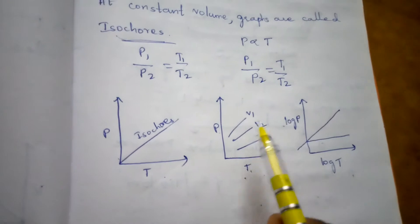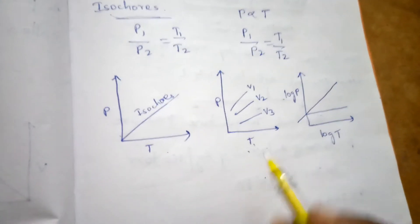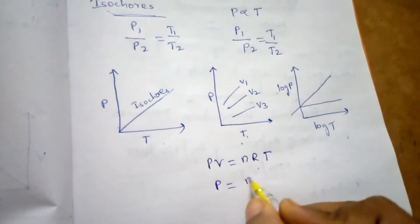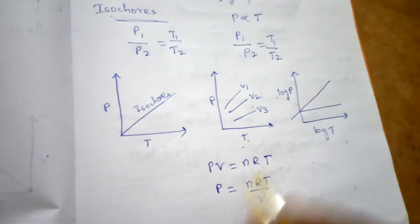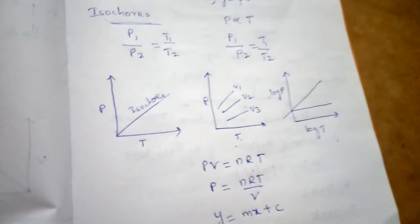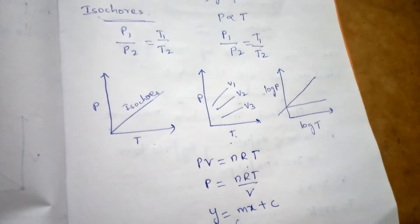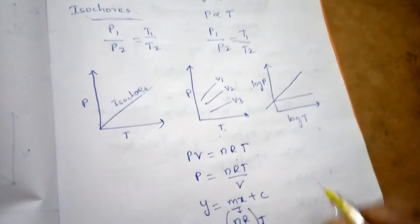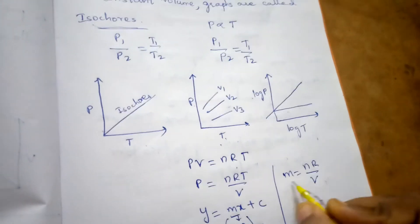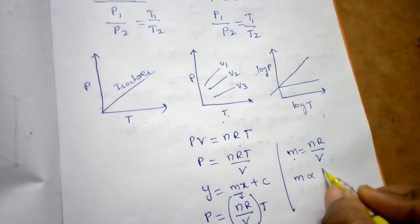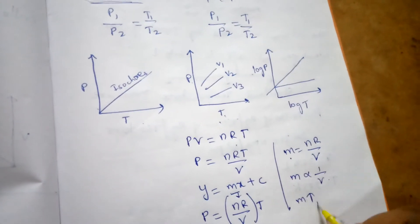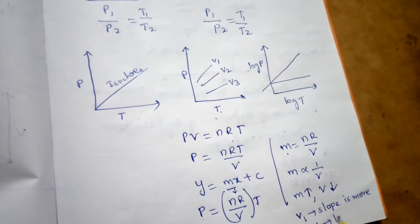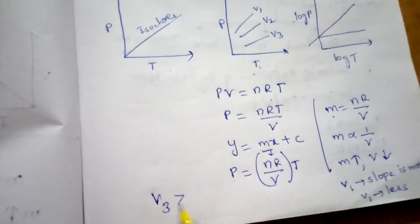For the graph of pressure vs temperature with three volumes V1, V2, V3, using PV = nRT: P = (nR/V) × T, so slope m = nR/V. Slope and volume are inversely proportional: as slope increases, volume decreases. For V1 the slope is greatest, so V1 is the least. The correct ordering is V3 > V2 > V1.